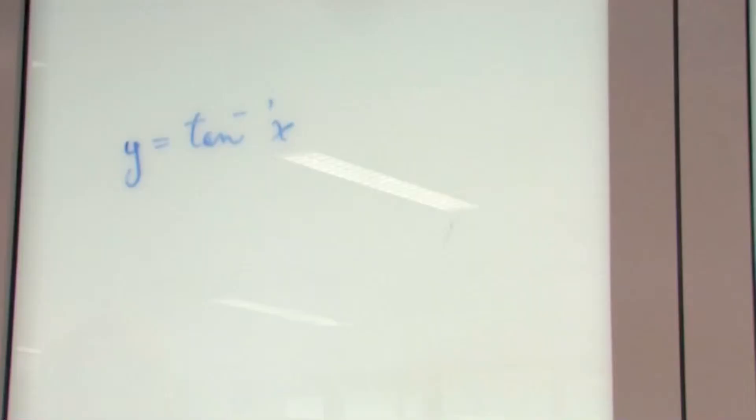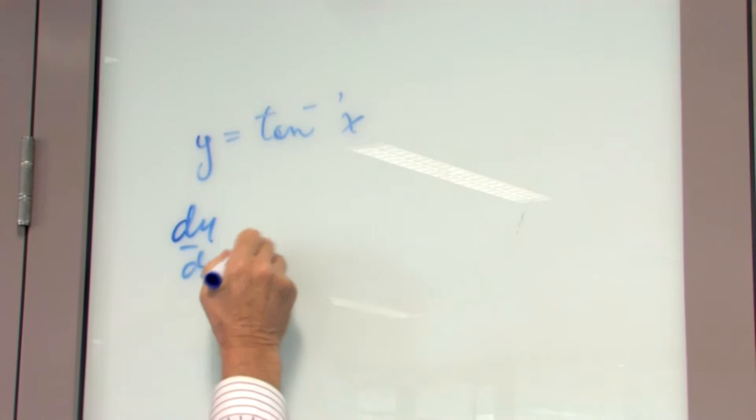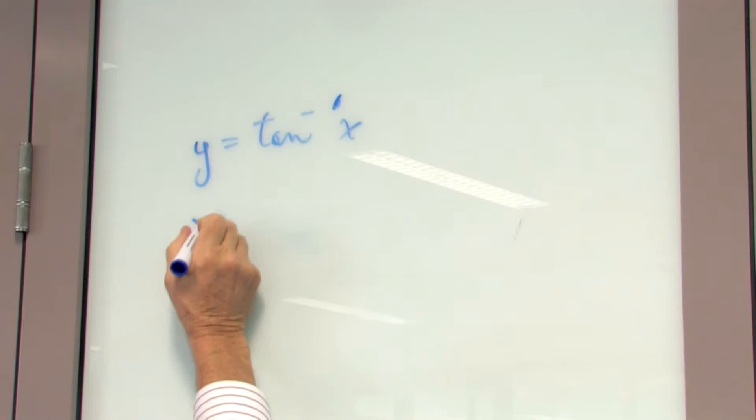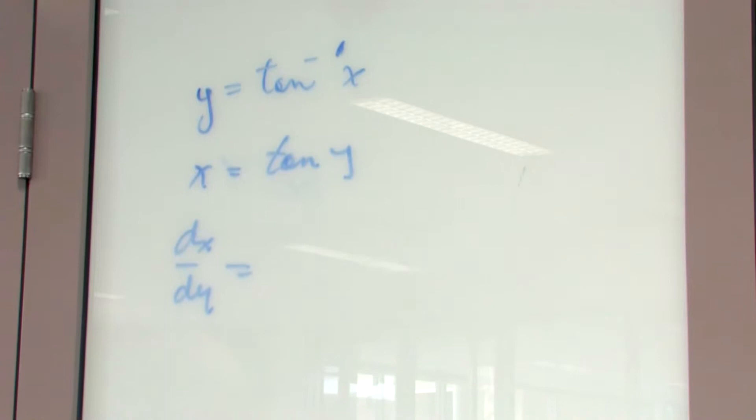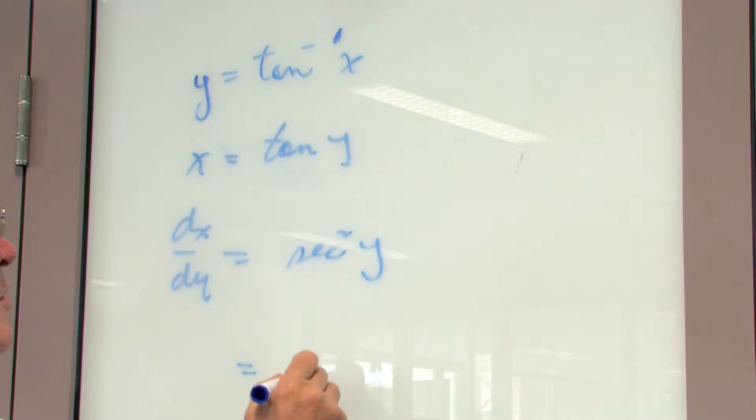Now differentiate both sides with respect to x — you get dy/dx. Since we can't get dy/dx directly, we rewrite arctan(x) as x equals tan(y). Differentiate both sides with respect to y, and the differential of tan(y) with respect to y equals sec²(y). And sec²(y) can be written as 1 plus tan²(y). That's dx/dy.